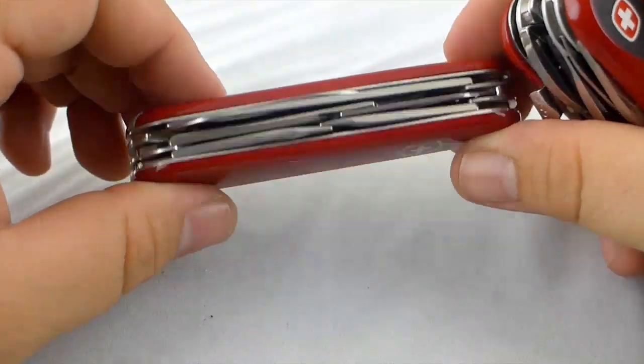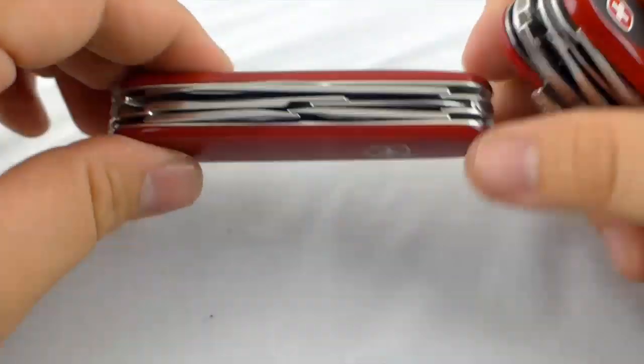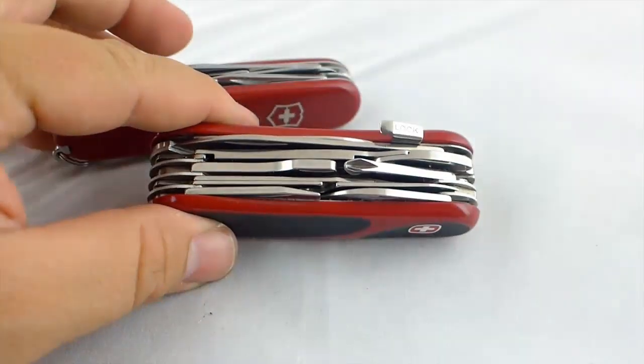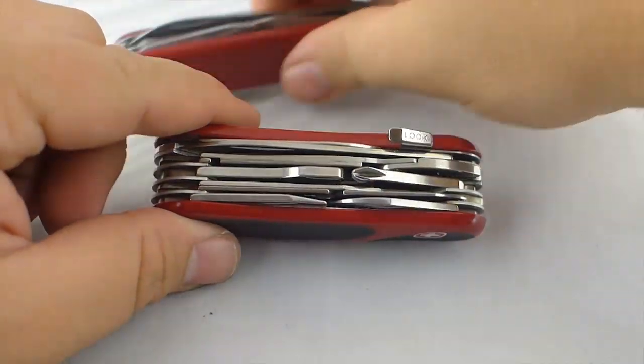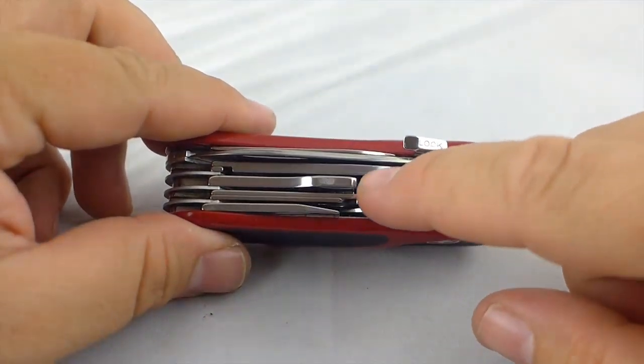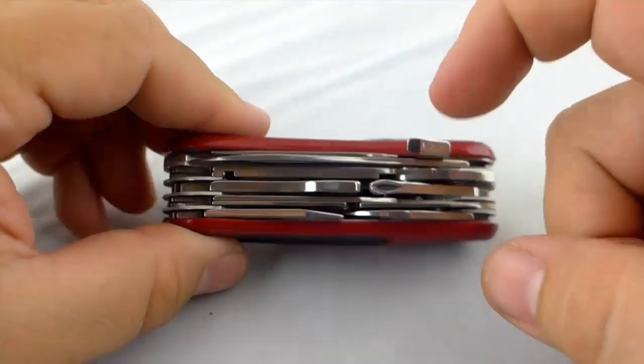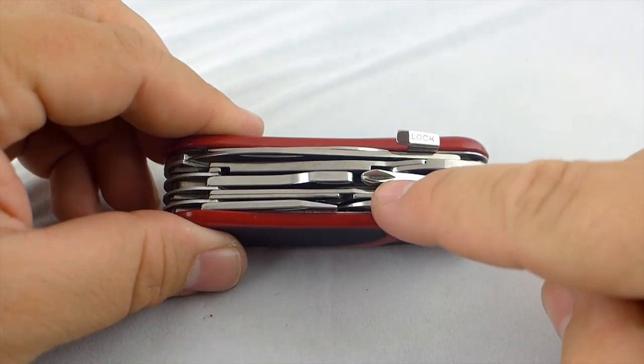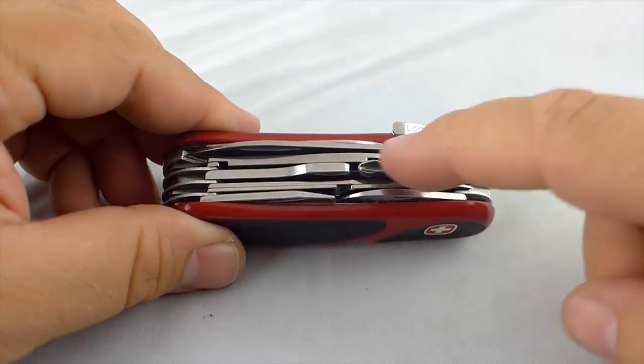I toyed with the idea of getting a deluxe tinker because I wanted to have the pliers. But I decided to go ahead and get this one, which is probably one of the closest knives to the deluxe tinker. And it has all the same tools except it's got this nail file instead of a small blade. And then it has this other row of tools here, which is the inline screwdriver and the wrench.